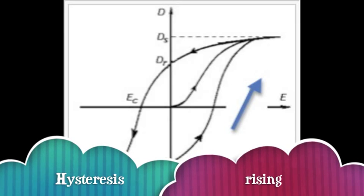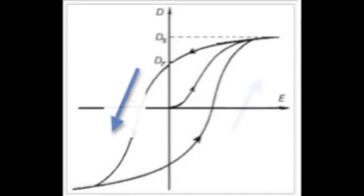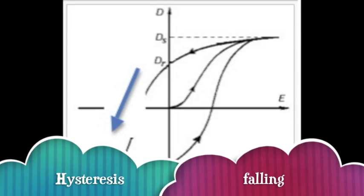In the diagram here, values rising follow a different path than values when they are falling.